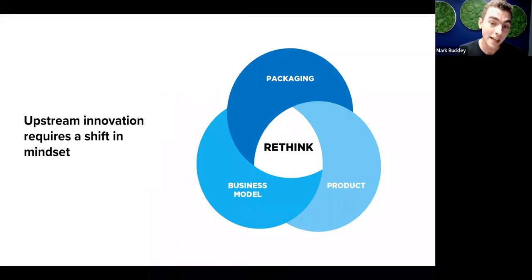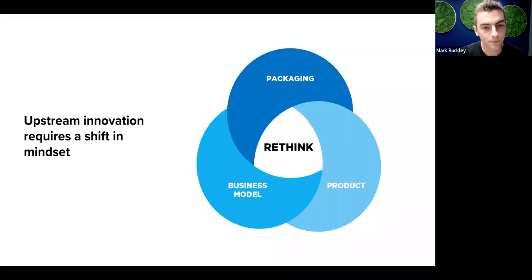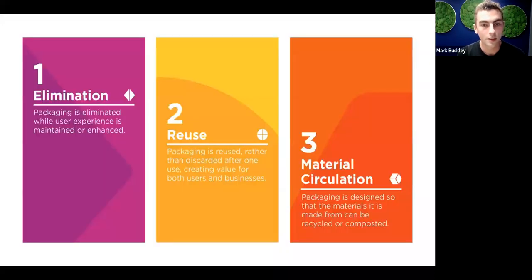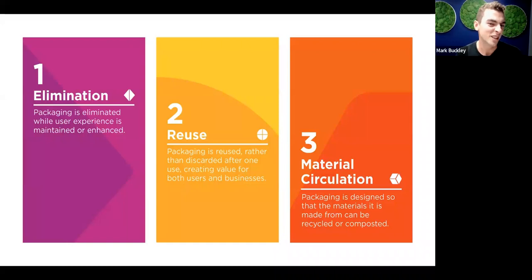To move beyond incremental packaging improvements to fundamentally rethinking how to deliver products and services to users, we need a mindset shift — thinking not just about packaging design, but about the product and the business model at the same time. Once that mindset is in place, it can be applied through three key circular economy strategies: elimination, reuse, and material circulation, and crucially in that order.